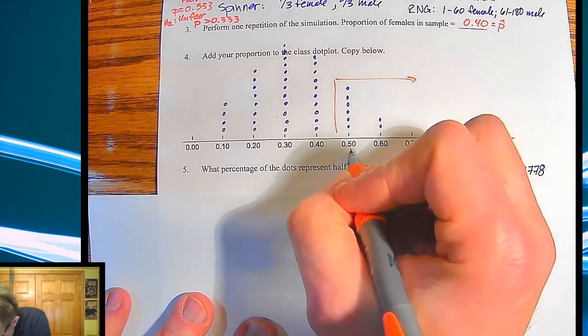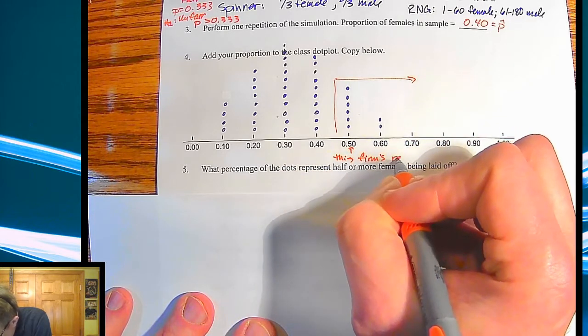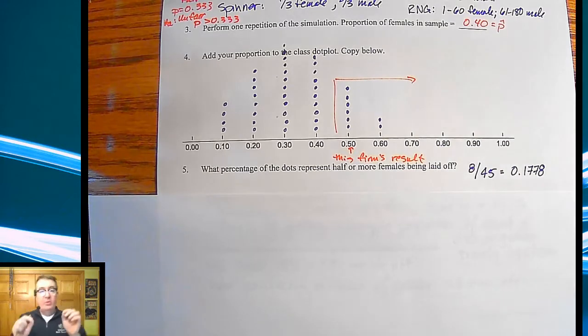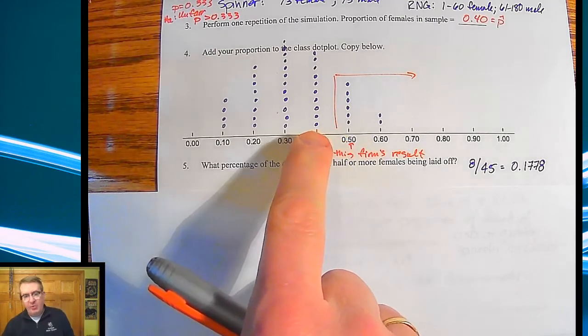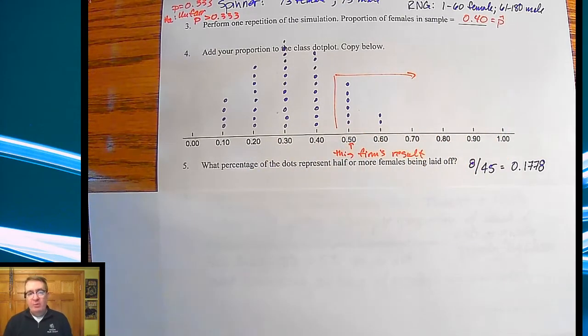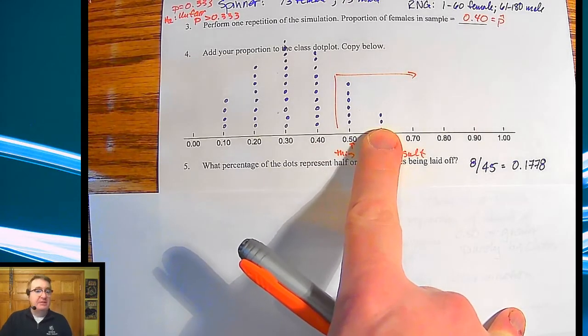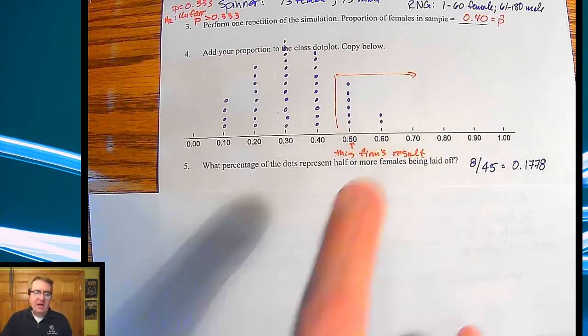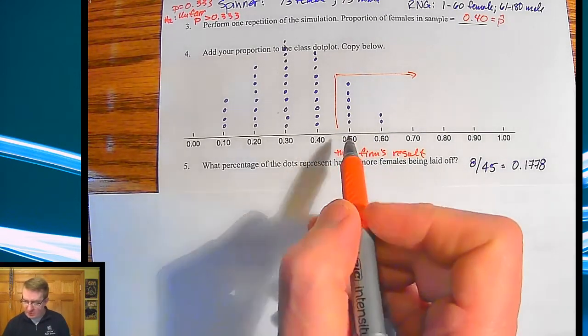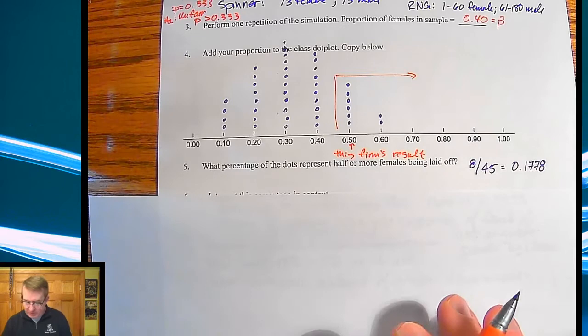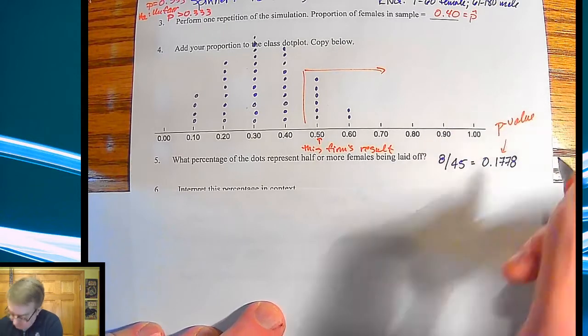And so then we ended up with what percentage represent half or more of the females being laid off. So that's going to be everything over there. This is this firm's results. So we always want to take a look at what we're testing or what the results that we're trying to say, is it unfair or not, and go more extreme. Why more extreme? Because we can say, well, it happened at 50%, but I had two samples from my class that got 60%. So we always want to go the firm's result or what we're looking for and more extreme. This over here is your p-value. That's the proportion that we got.